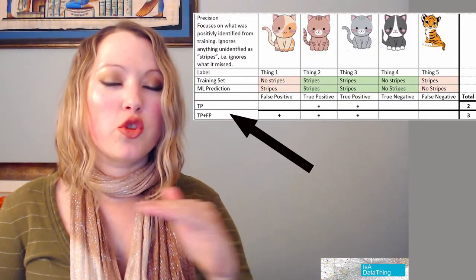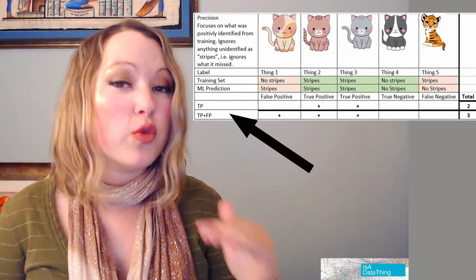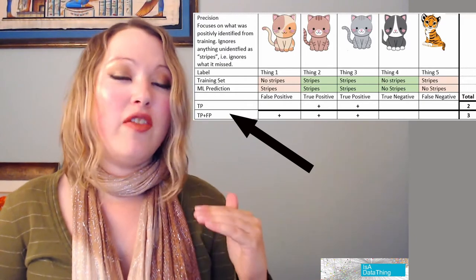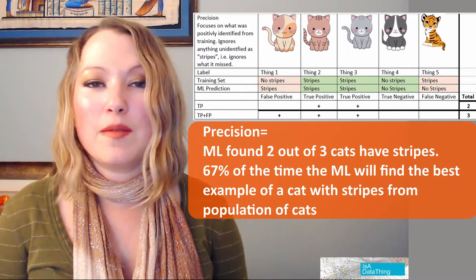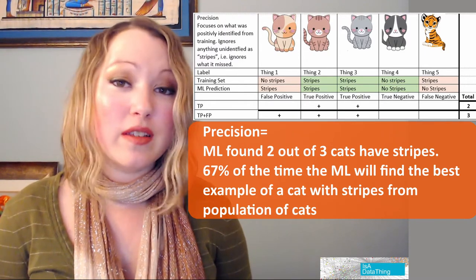Now we're getting into precision and recall. Precision and recall are used a lot in machine learning as well as search engine optimization. If you have good precision and recall, you're getting a good search result. Precision is looking at how often the machine got it right based on what you've taught it. The way to calculate precision is true positives divided by true positives plus false positives. So here we're getting about 67%. These measures are not comparative — you're not comparing accuracy to precision; all of these are weighting different aspects, and that's why you have to match the aspect you're measuring to your use case.